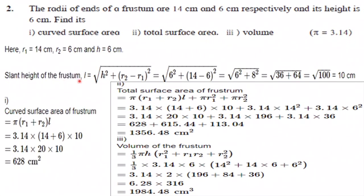Slant height of the frustum we will find out first. Use formula: root of h square plus (R2 minus R1) square. Substitute the values: h is 6, R2 is 14, R1 is 6. So 6 square plus 8 square, it is root 100 is 10 cm slant height.